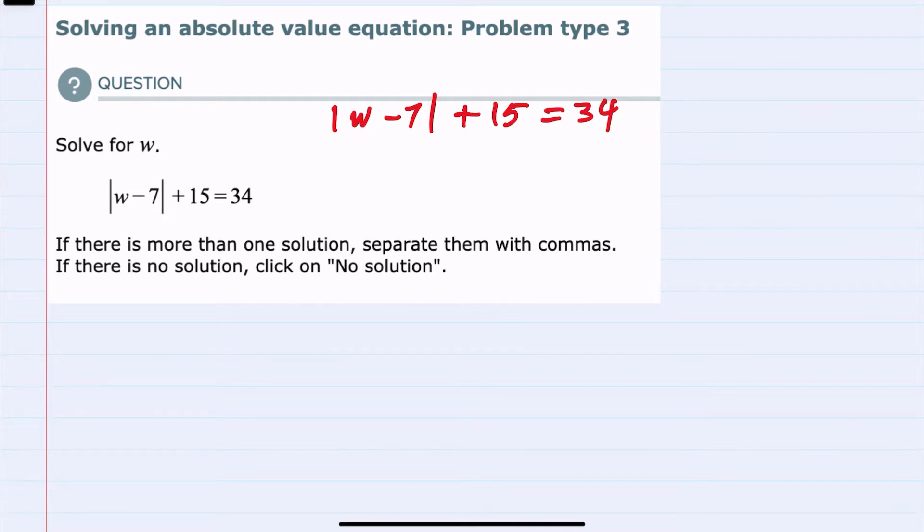In this case, the W is inside of an absolute value, so my first step is to get that absolute value by itself. Here, I can subtract the 15 from both sides of the equation to then have the absolute value of W minus 7 equals 19.